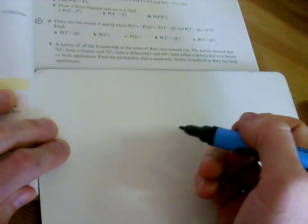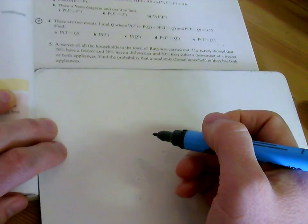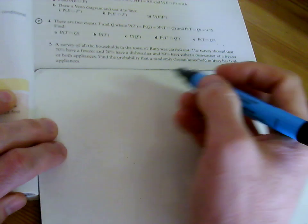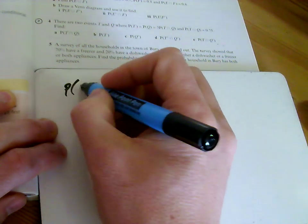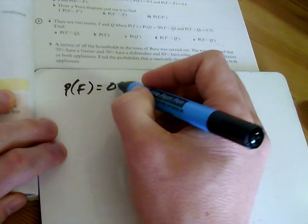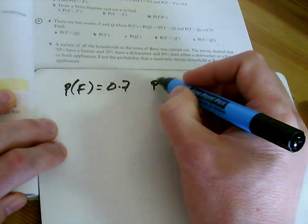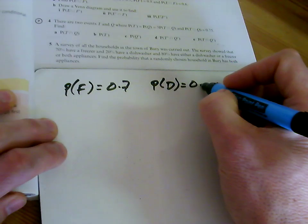5. Survey of the households in Bury. We've got the probability of having a freezer is 0.7. The probability of having a dishwasher is 0.2.